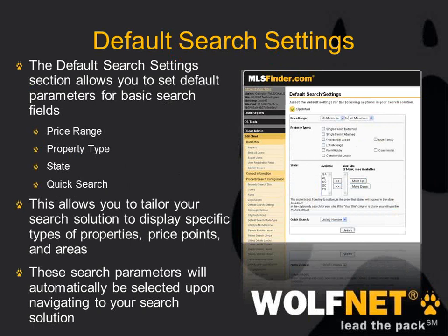The default search settings are basically what settings are pre-checked for people when they first arrive to your site. For instance, if you want your site to load with single-family homes selected with a minimum of $200,000 to $400,000 predefined, you can set that up back here. So if you're targeting specific demographics on your site, it's handy to have criteria pre-selected for your visitors.